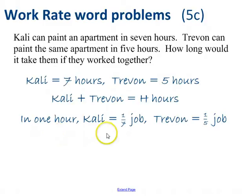If they just worked at it for one hour, well, Kali, it would take him seven hours, I'm saying him, it might be her, it would take her seven hours to do the whole job. So in one hour, she would only have done one-seventh of the job. Trevin, in one hour, would only have done one-fifth of the job.